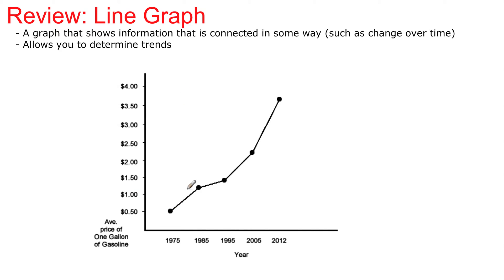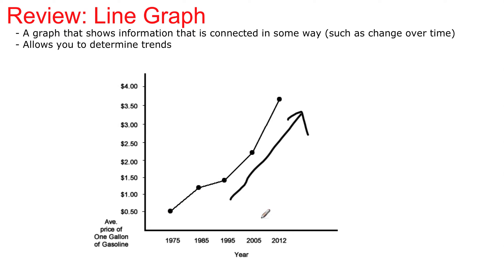These data points are connected — connect the dots essentially — and you see an upward trend. Over however many years, there is an upward trend in the price of gasoline. This is talking about one piece of information: what is the price of gas over time? Price, time, and there's your trend — upward — more expensive gas over time.